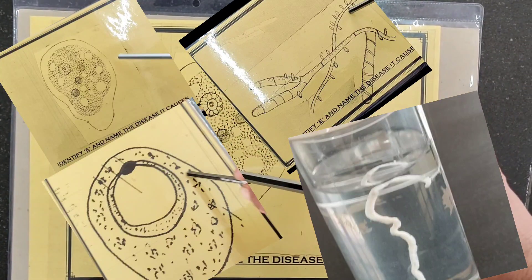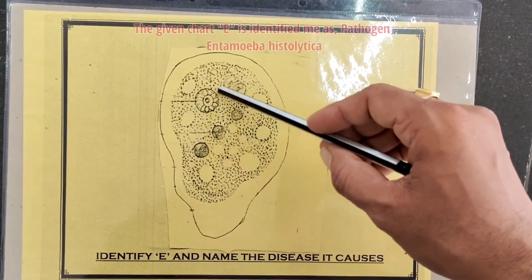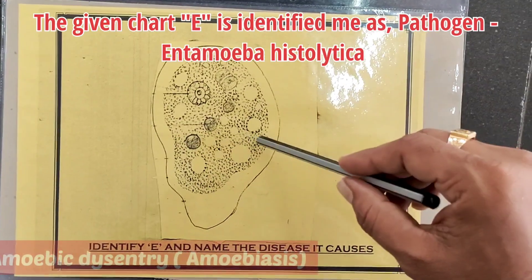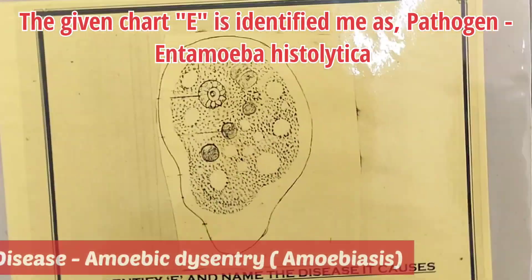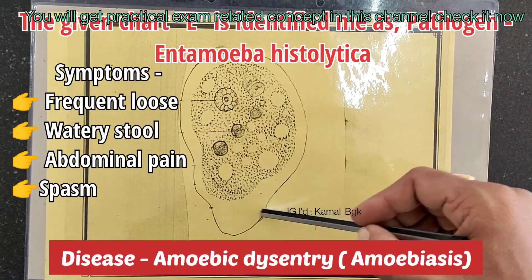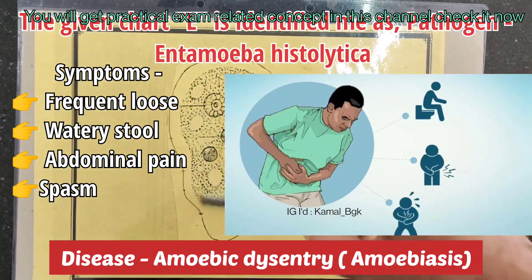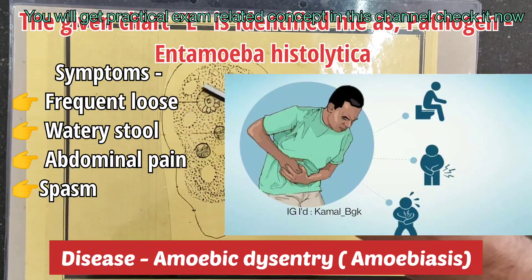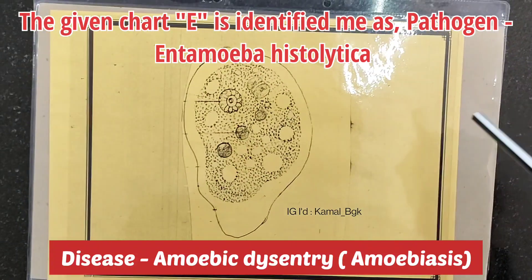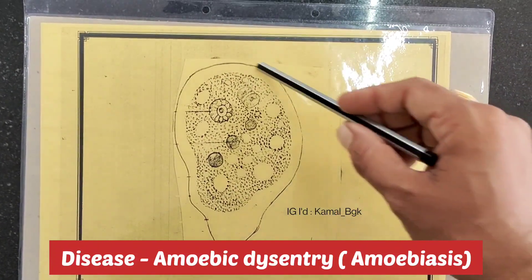The given chart is identified as pathogen Entamoeba histolytica, which causes the disease amoebic dysentery. The symptoms are frequent loose watery stool, abdominal pain and spasms. Structurally, it has pseudopodia and is mainly surrounded by ectoplasm, with a nucleus at the center.